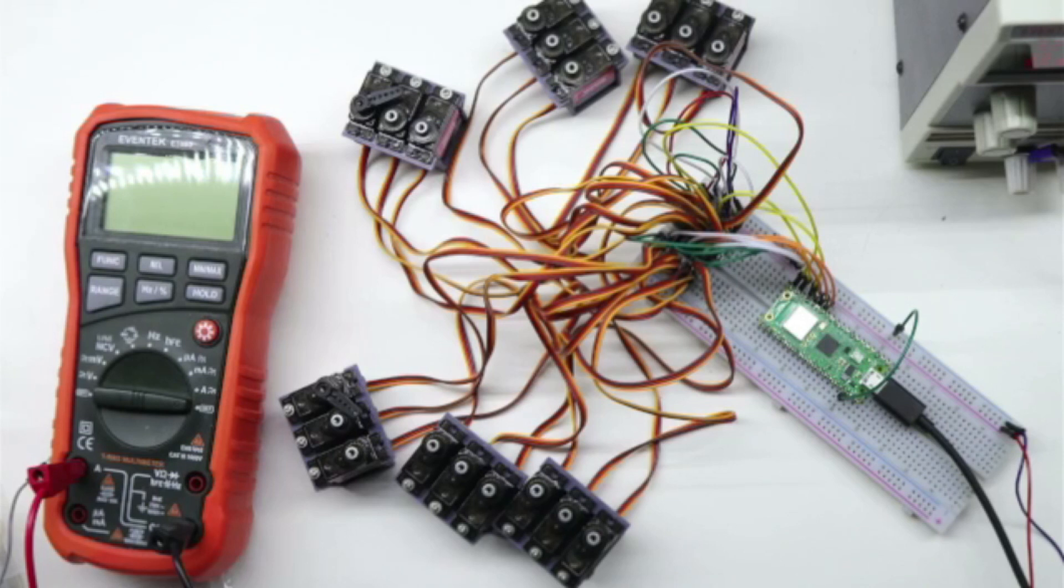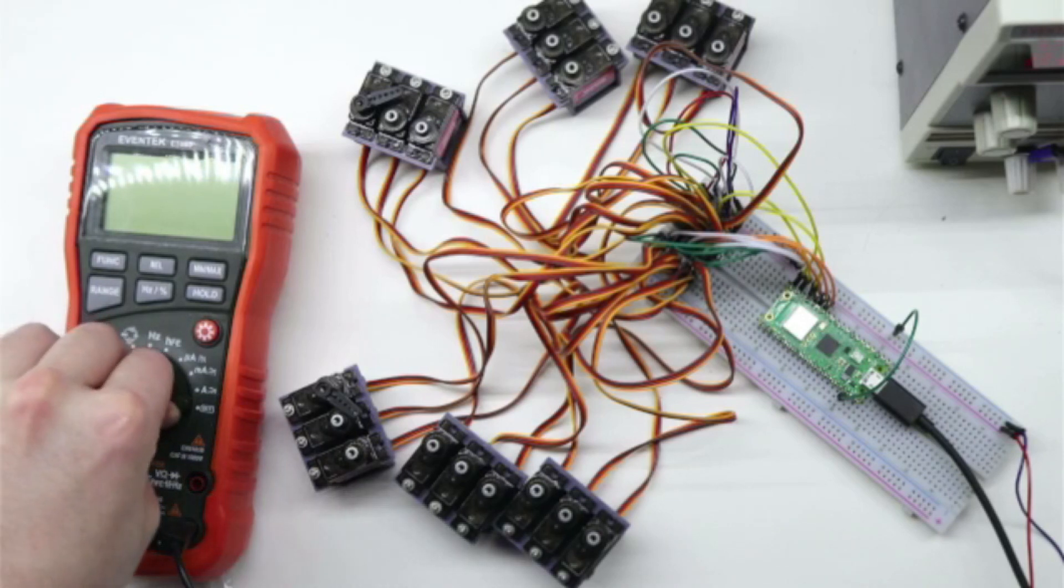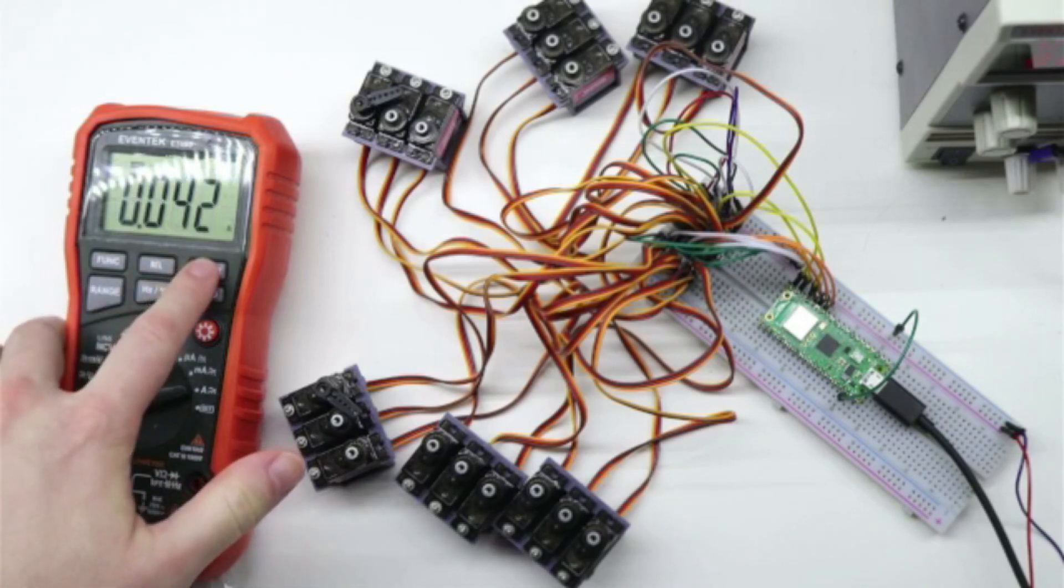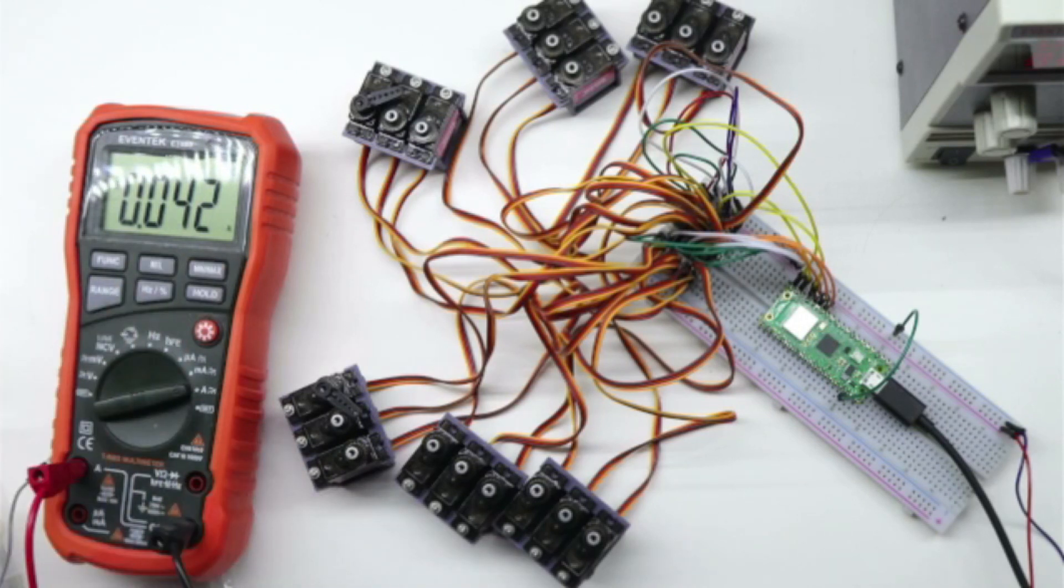I've hooked up my desktop power supply and a voltmeter. I'm now going to measure current. I've uploaded a simple program to the Pico that just moves all the servos back and forth. It seems to max out about 1.9 amps.